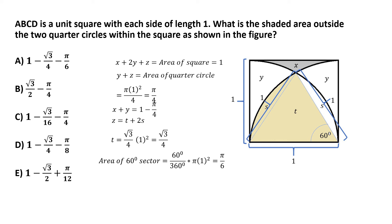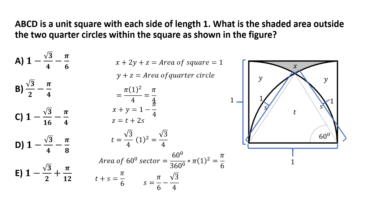In terms of our labels, the area of that 60-degree sector equals t plus s. So t plus s equals π/6. We already found that t equals root 3 by 4, so we can solve for s: s equals π/6 minus root 3 by 4. With that value of s, we can find z: z equals t plus 2s equals root 3 by 4 plus 2 times (π/6 minus root 3 by 4), which simplifies to π/3 minus root 3 by 4.